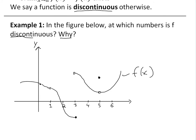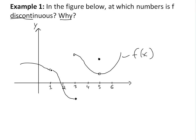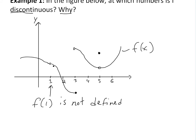Remember, if you draw the graph without removing your pen, it's continuous. But right here you have to remove it because this value is not defined. So at this number it's discontinuous because f(1) is not defined — that's what the open circle means: it has no value.